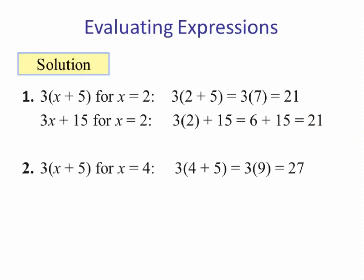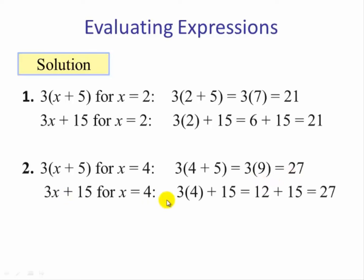For number two, x is now four. We do the same procedure — parentheses first, then multiply. We get twenty-seven. For the second expression, three times four, we multiply then add, and again we get the same value.